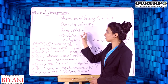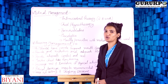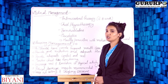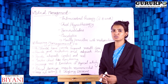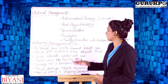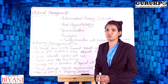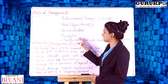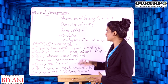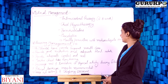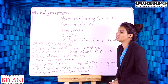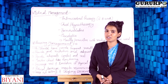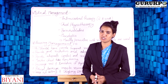Bronchodilators are given to dilate the bronchi. Next, mucolytics are given to convert the pus collection inside the lungs into liquid form so it can be expelled. Third, mostly penicillin and metronidazole are used — these two medicines are primarily given in this condition.